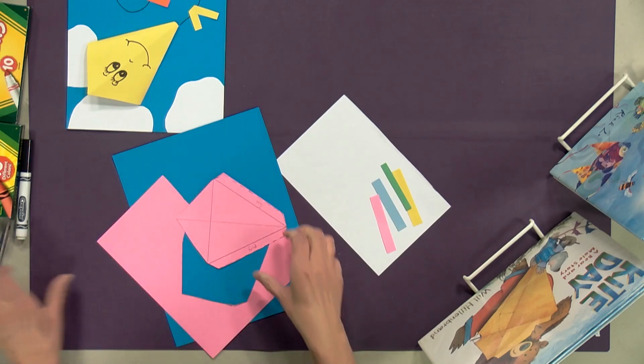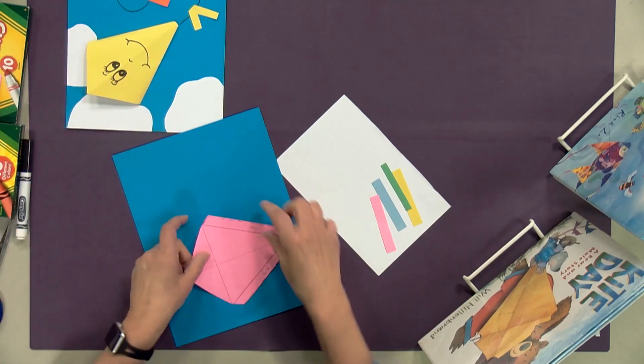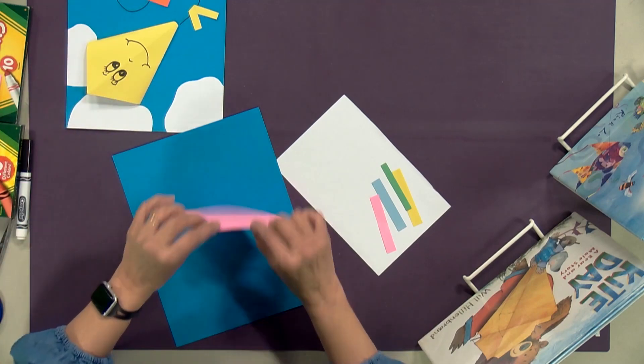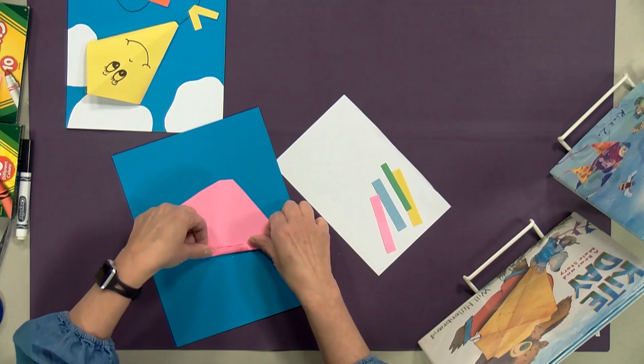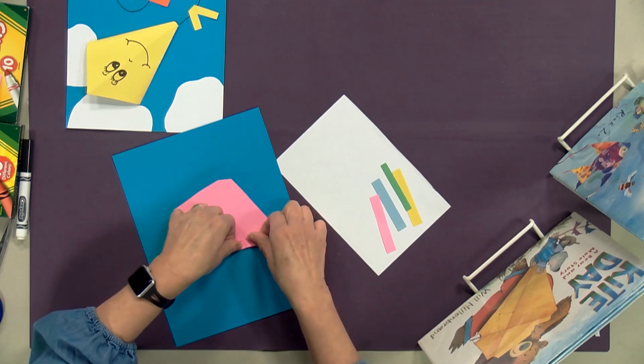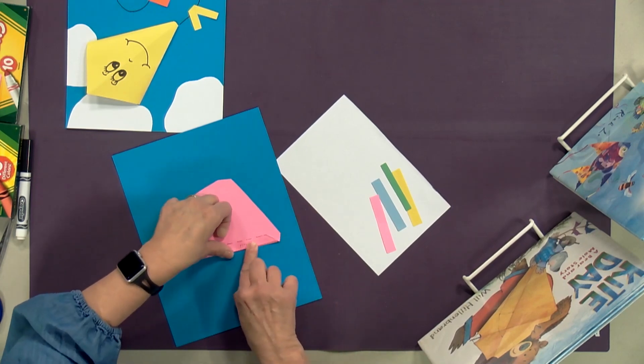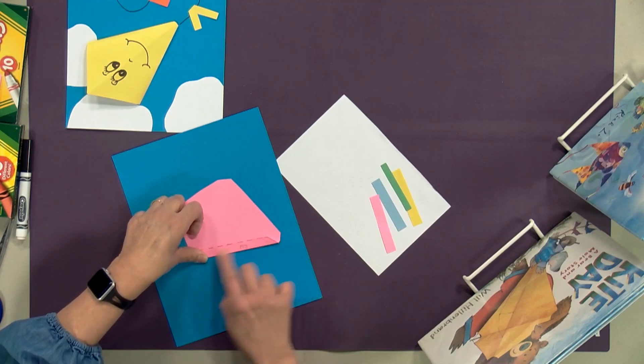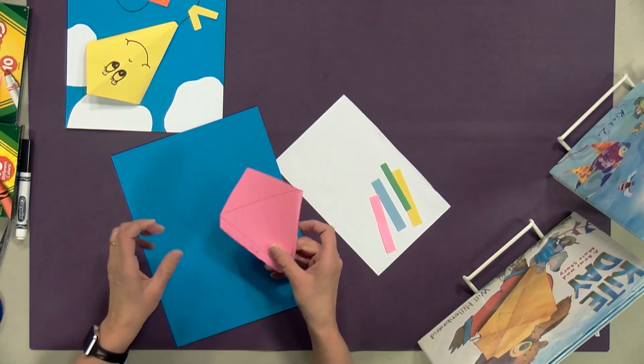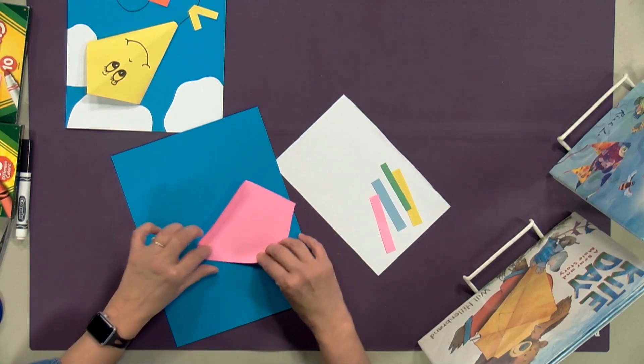We're going to get this all cut out and throw our trash away. Now where it says to fold, we're going to take this line and fold right on that line. This is going to help us glue this piece down, this little tab or little flap, and that way it will look 3D.